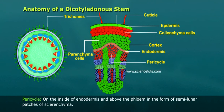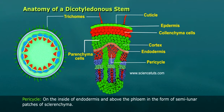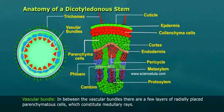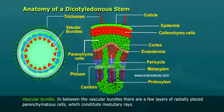Pericycle is on the inside of endodermis and above the phloem in the form of semilunar patches of scleriancyma. In between the vascular bundles, there are a few layers of radially placed parenchymeter cells, which constitute medullary rays.